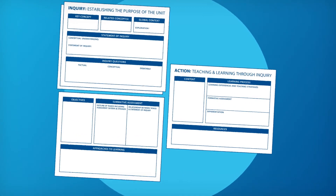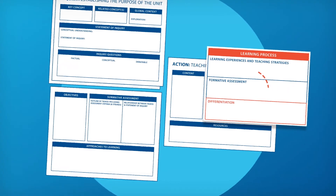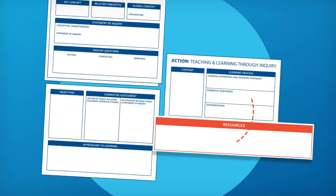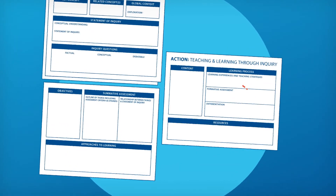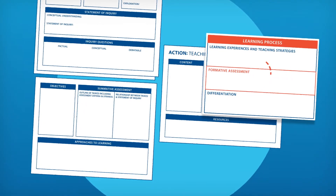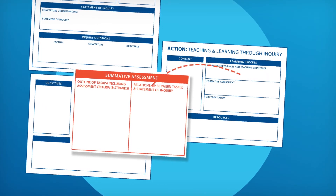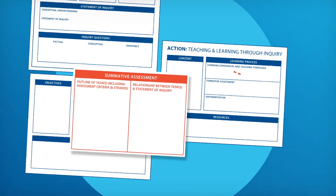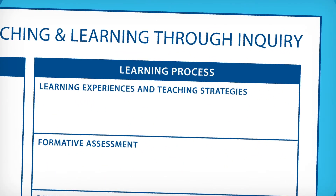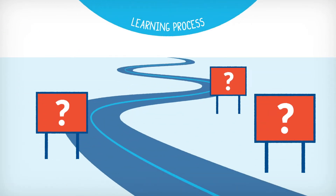It is also helpful to indicate when differentiation is provided, the unit's resources are used, formal and informal formative feedback and assessments occur, and the unit summative assessment occurs or is developed. The description of the learning process should identify a variety of inquiry-based, engaging, and developmentally appropriate learning experiences.